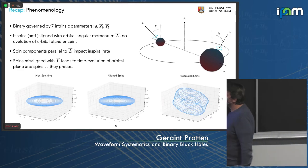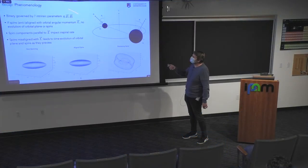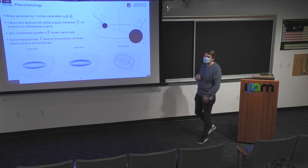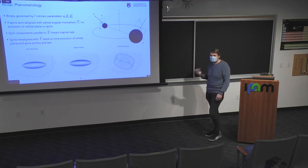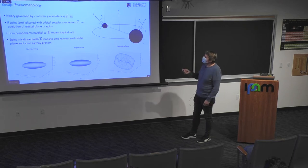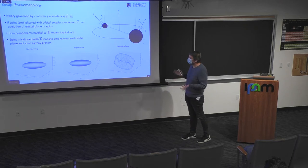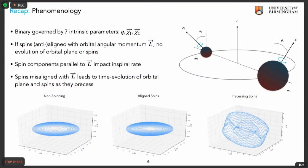In terms of intrinsic parameters, I'm talking about systems governed by seven parameters. For vacuum systems, the total mass is an overall scaling, so we really have the mass ratio and two spin vectors. The first morphology is the non-spinning case: both black holes have no spin, they just inspiral and merge. We can then have an aligned-spin system where the spins are parallel or anti-parallel to the orbital angular momentum, which impacts the inspiral rate — you get the orbital hang-up effect or an anti-aligned attractive effect.